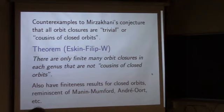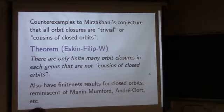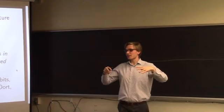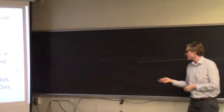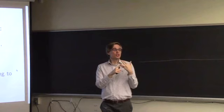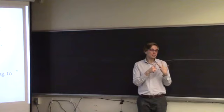We have eight counterexamples. With Alex Eskin and Simion Filip, I showed that there are only finitely many counterexamples in each genus, and in fact only finitely many things that are even candidate counterexamples — only finitely many things that are not cousins of closed orbits. Alex Eskin and I also have finiteness results for all orbit closures, even closed orbits and cousins thereof. The result has a form you see in many places: if you have infinitely many surprising objects, the reason is there's actually one bigger, even more surprising object, and once you know about it, all the little surprises become obvious.